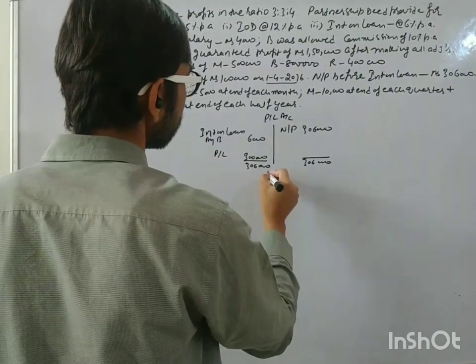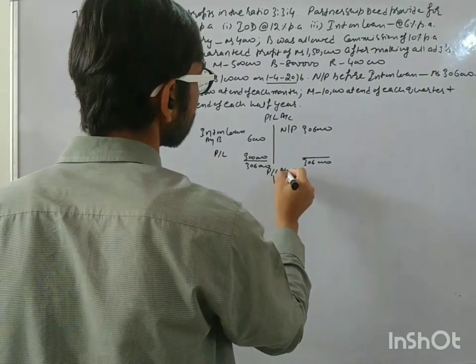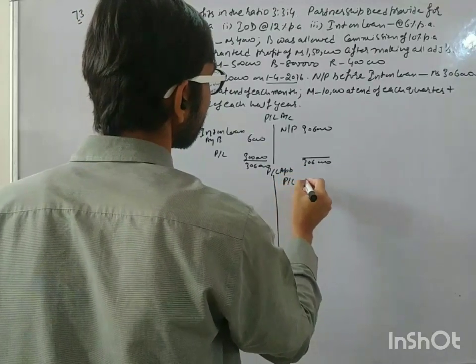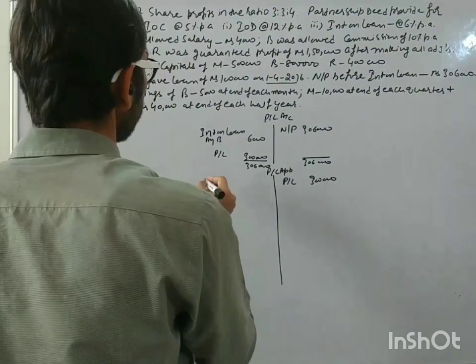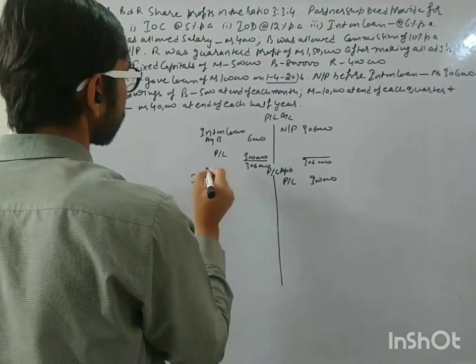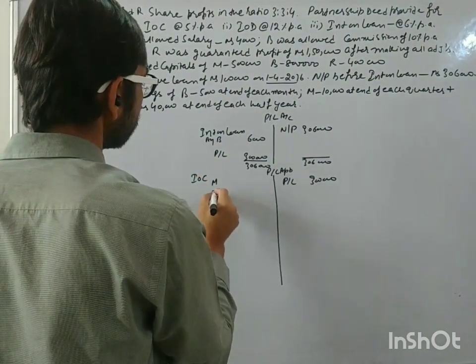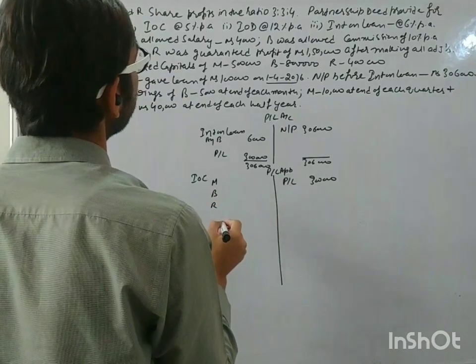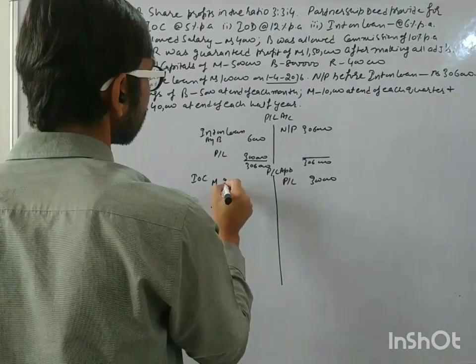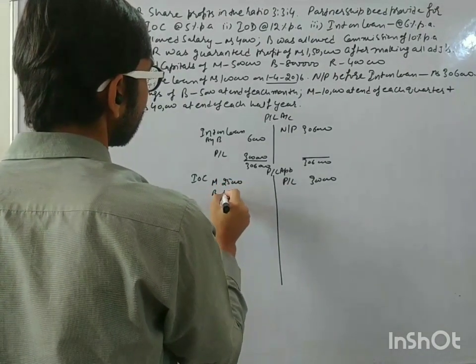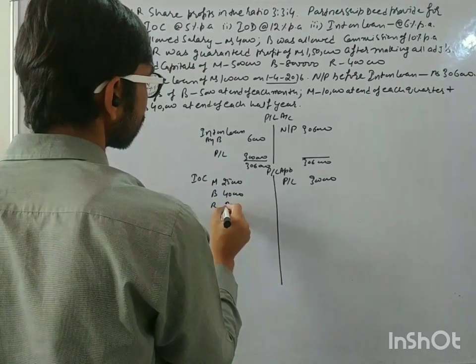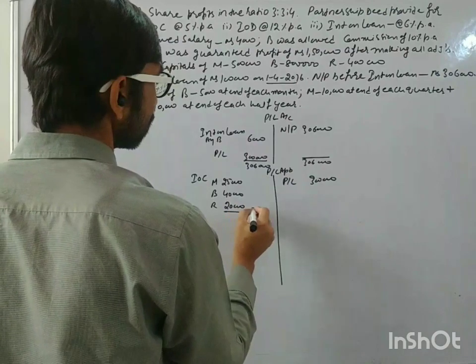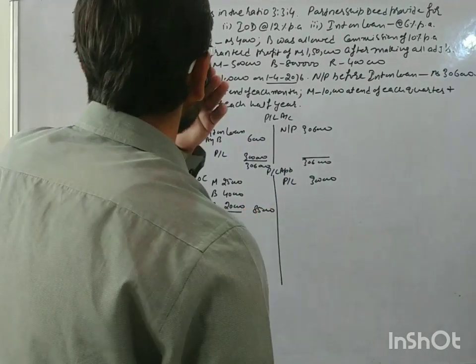Now here, P&L capital appropriation account. P&L is 3 lakh rupees. First of all, IRC. M, B, and R, fixed capitals 5 lakhs, 8 lakhs, and 4 lakhs. So interest on capital: 25,000, 40,000, and 20,000. So this turns out to be 85.